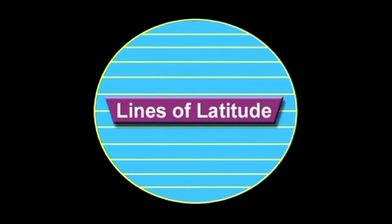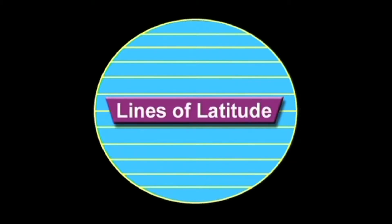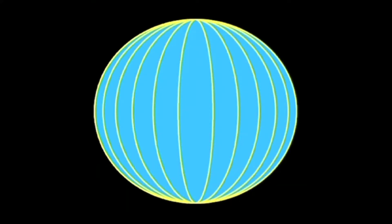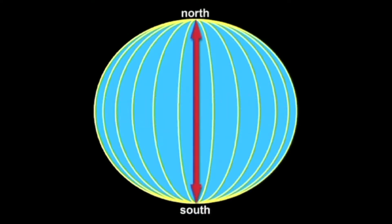The lines that go around the Earth are called lines of latitude. Lines of latitude go around the world from east to west. Latitude lines look like the rungs of a ladder — so think: ladder, latitude. They're also called parallels. The lines that go up and down are called lines of longitude. Lines of longitude run north and south from the north pole to the south pole. Think of long lines for longitude.